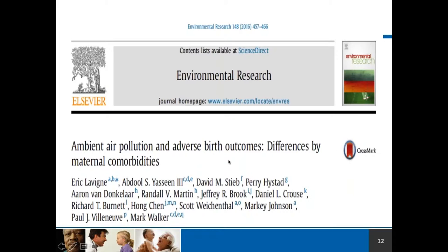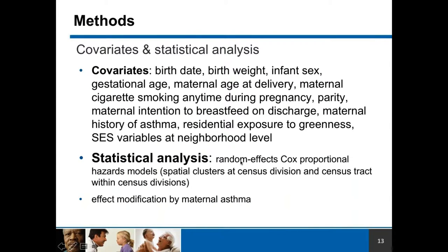The covariates used in this analysis included birth date, birth weight, infant sex, gestational age, and maternal age. Some important covariates we had access to were maternal cigarette smoking and maternal intention to breastfeed — retrieved from the BORN cohort. We also obtained information on maternal history of asthma, as we wanted to examine it as an effect modifier, and information on green space exposure as a potential confounder. SES variables at the neighborhood level were also included. We used random effects Cox proportional hazard models, and effect modification was investigated by maternal asthma status.